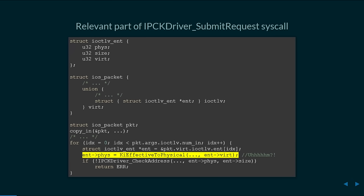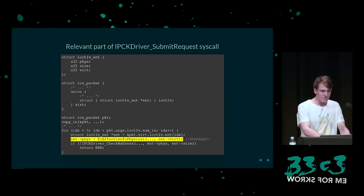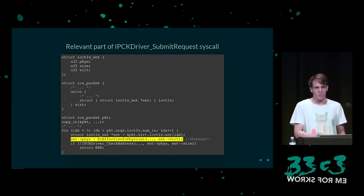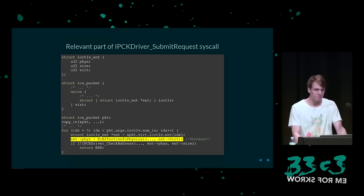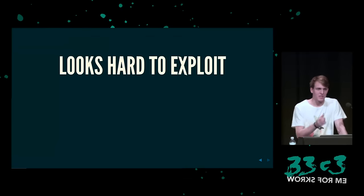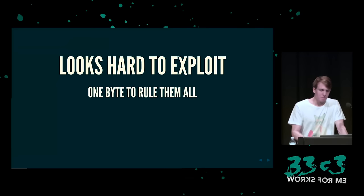Wir füllen die Größe und die virtuelle Adresse aus, und der Kernel ändert ganz angenehm für uns die virtuelle Adresse zur physischen Adresse. Er kopiert den User-Mode rein, geht durch alle Einträge und repariert die physikalischen Adressen für uns. Da ist kein Sicherheitsmechanismus drin — das gibt uns einfach einen Schreibzugriff auf ziemlich alles, was wir wollen. Wir brauchen eigentlich nur einen Byte, um den ganzen Kernel zu exploiten.